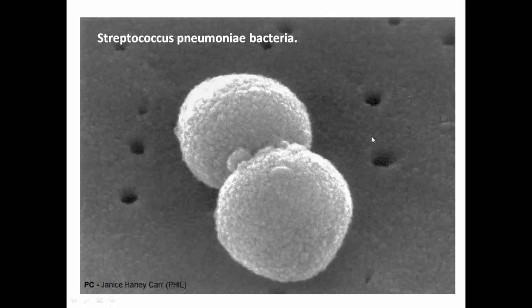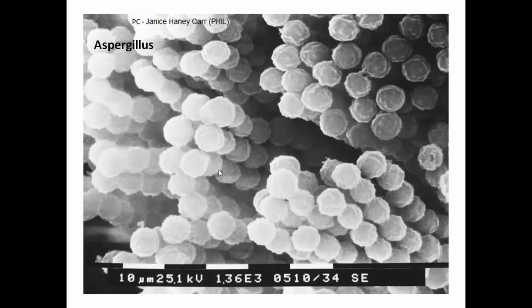We'll start with Streptococcus pneumoniae. You can see on your screens these two organisms — these are Strep pneumoniae. We classically describe them as lancet-shaped organisms in the microscope, and this is that lancet shape. Some relevant points: it causes meningitis, otitis media, pneumonia, and sepsis. It's a gram-positive bacteria.